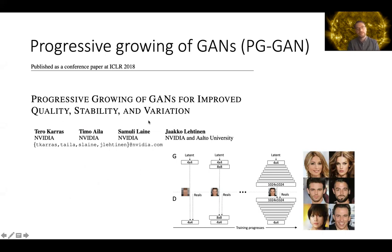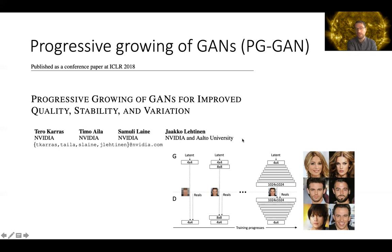Our starting point was the so-called PGGAN model, published in 2018. The first results and the general approach are shown here. This progressive training means that you feed first low-resolution images, and then more and more high resolutions during training so that you get, in the end, to the highest resolution images. This can help stabilize the training.